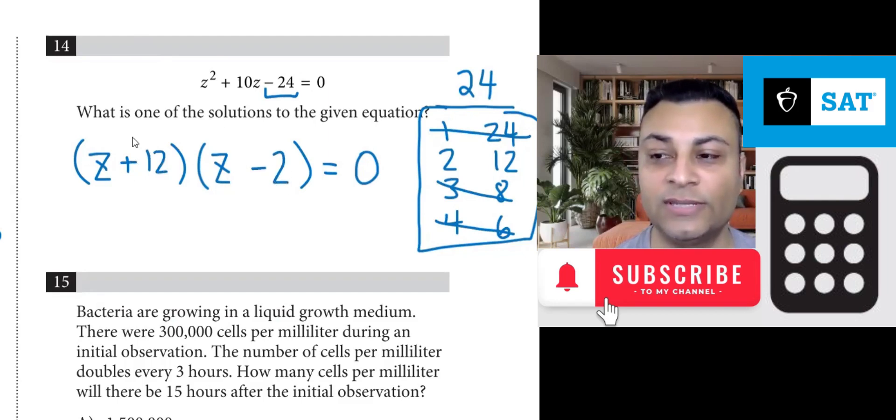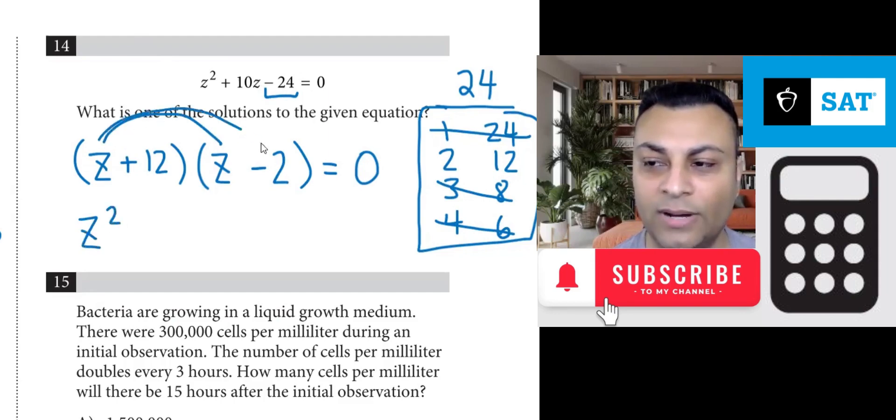And if you FOIL this out, you'll get 10z in the middle. Just to demonstrate: z times z is z squared, minus 2z, plus 12z, minus 24.